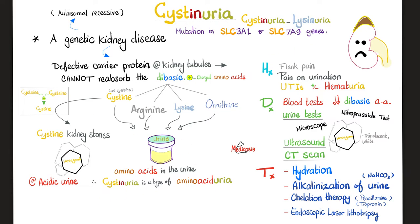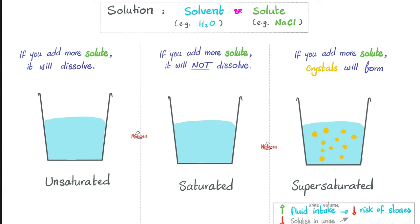If a stone is large and won't pass, endoscopic laser lithotripsy is used. Extracorporeal shockwave lithotripsy is usually not enough for this disease. Back to basic chemistry: consider a solvent like water and a solute like salt. An unsaturated solution keeps dissolving more salt. Once saturated, no more dissolves. If you keep adding more salt, crystals form — this is a supersaturated solution. To decrease crystal risk, either increase solvent by drinking more water, decrease crystal load with chelation therapy, or change the urine pH.